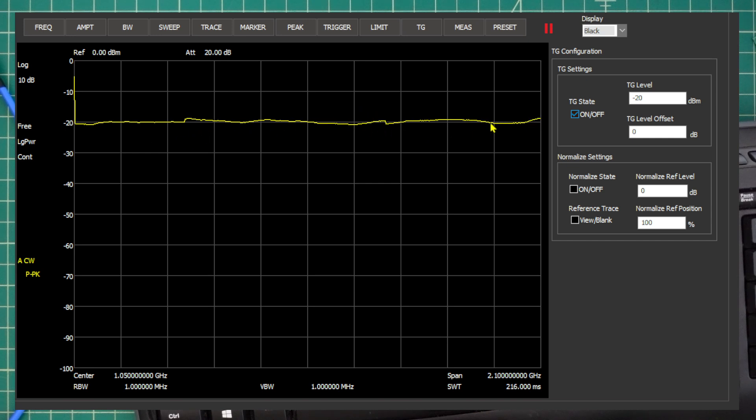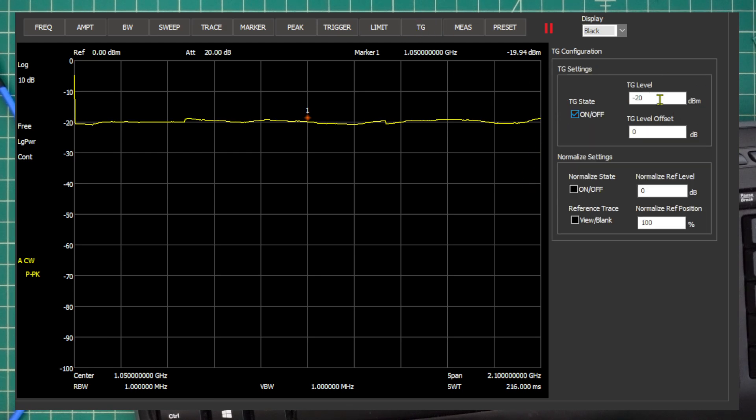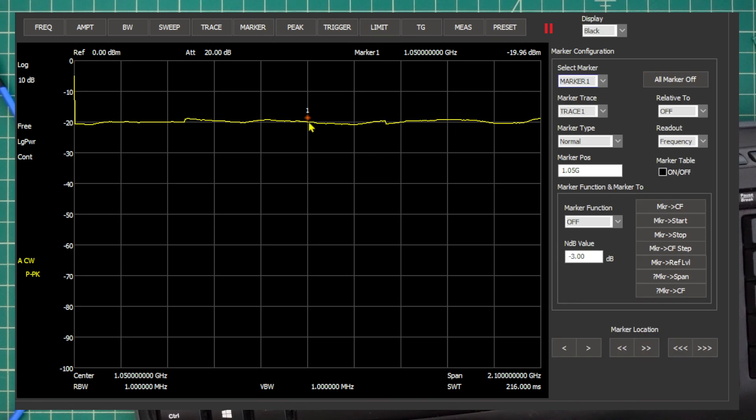Now, what we can do is we can actually normalize this. And what that will do is it will take into account for any deviations that we see in the cable. But what you can see here is that at certain frequencies, let's get a marker on here. We do have some deviation. So let's go to marker type normal. And there we have a marker type. Now, when we took a look at our tracking generator tab, our tracking generator level is negative 20 dB. And we can see over here with our marker, let's go back to the marker table.